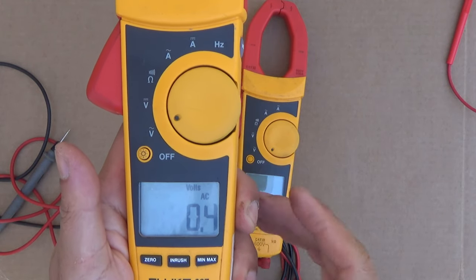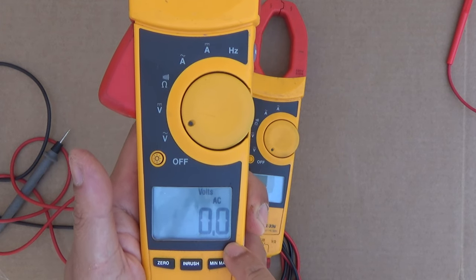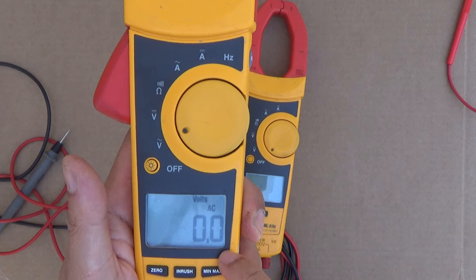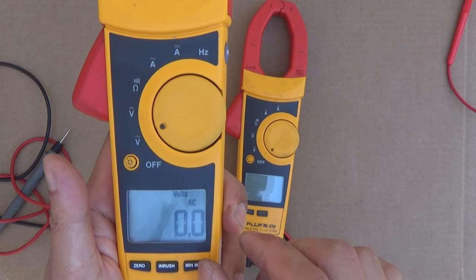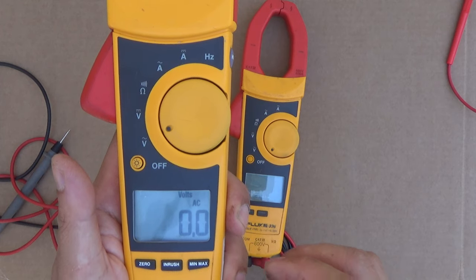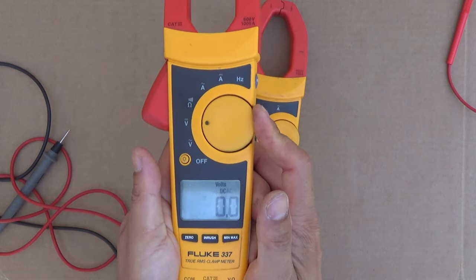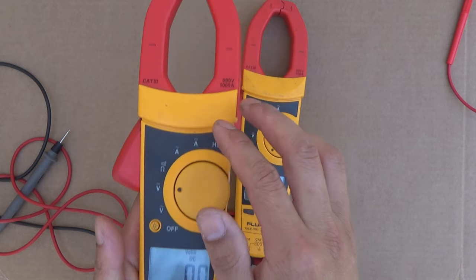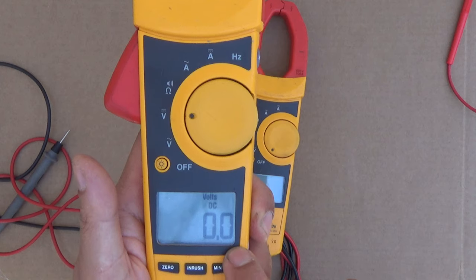You can see here, the voltage function also has one decimal place. So it's only accurate up to the tenth. If you need something that's a little more accurate that can give you more digits, then you'll probably need a different kind of meter. Because this is mostly designed to measure amp with the clamps. Also for DC, it only has one decimal place.